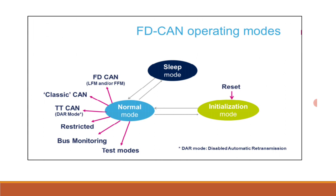Test modes include external loopback mode, where the controller treats its own transmitted messages as received messages, and internal loopback mode, where the controller can be tested without affecting a running CAN system. Upon a CPU request, the FD CAN enters sleep mode, which operates at low power. In sleep mode, the internal pull-up is active on the CAN TX pin.